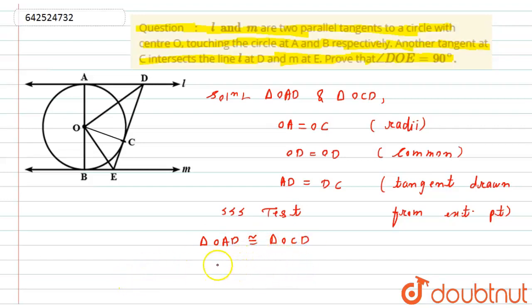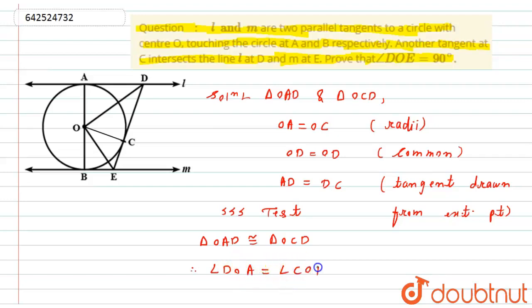Since triangles OAD and OCD are congruent, their corresponding parts are equal by CPCTC. Therefore, angle DOA equals angle COD.